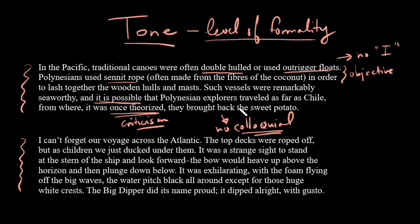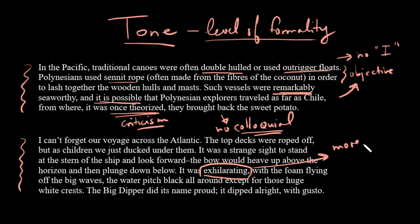Academic writing, because it does these things, also tends to seem more objective — though it isn't necessarily. Another thing to watch out for is a lack of emotion. In this passage we have the word 'remarkably,' and that's about as much emotion as we see. The second passage uses the word 'exhilarating' by contrast, which is much more emotional — we could call this hyperbolic, a little bit more over the top.